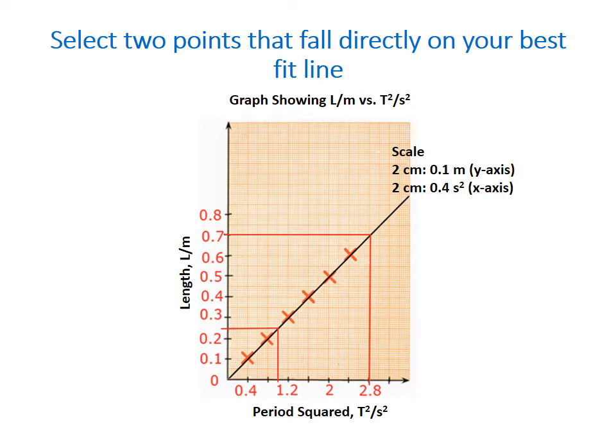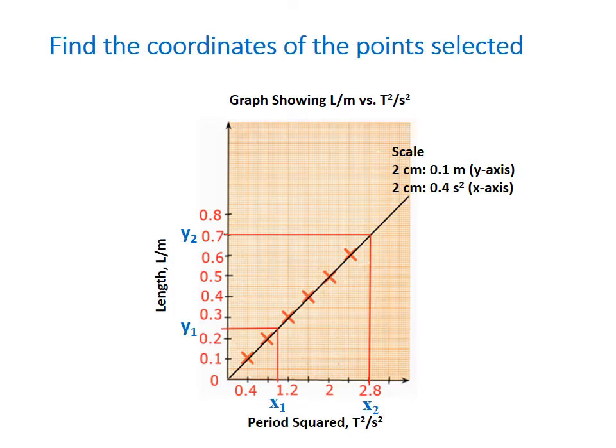So after we select the points that fall directly on our best fit line, we're now going to find the coordinates for these points. So now I would highlight the coordinates for these points. So this is y2, and this is y1, this is x2, and this is x1. Now y2 is usually the larger of the two y values, and x2 is usually the larger of the two x values. But if you should have them the reverse, your answer will be the same, because the negative values that you would get, they would cancel each other. So once you have your line sloping like this, you're going to get a positive value for your gradient.